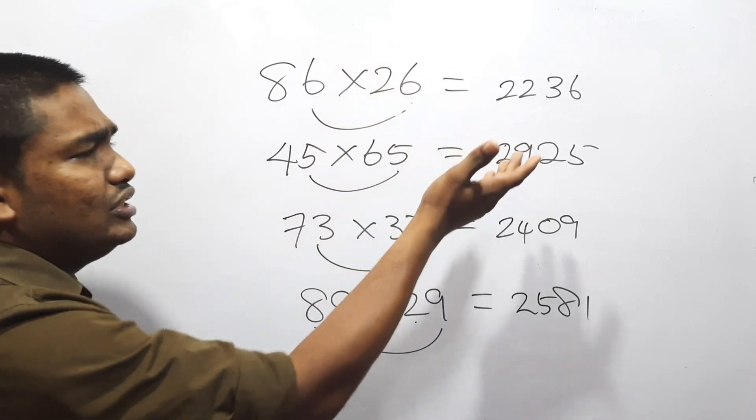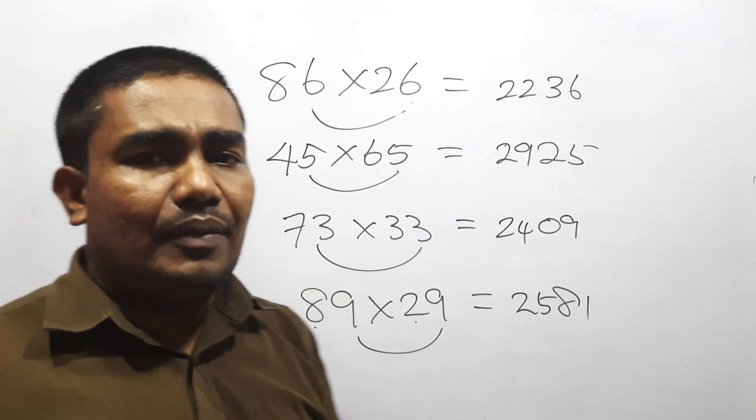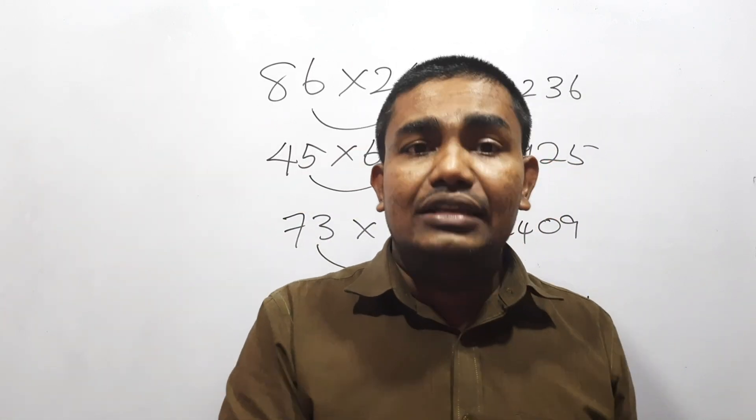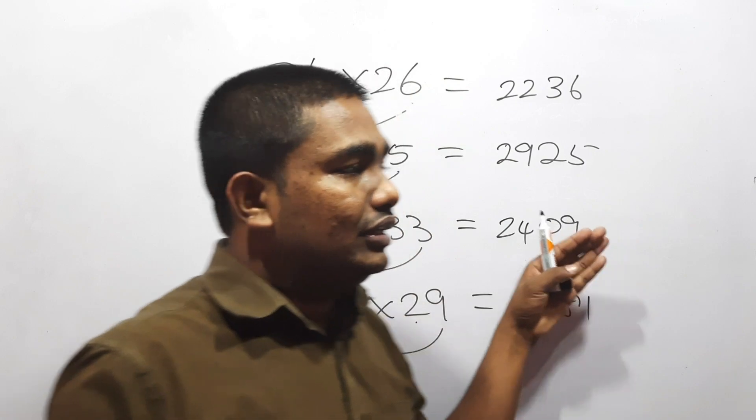That is the requirement: unit place numbers should be same and sum of tens place numbers should be equal to 10. Then we can use this method to calculate the answer very quickly.